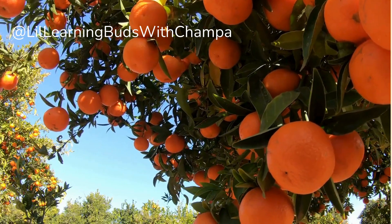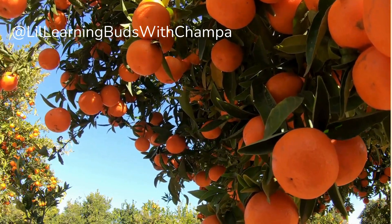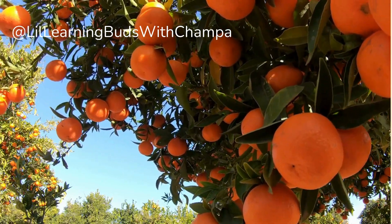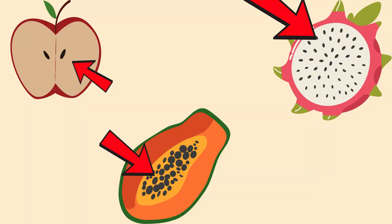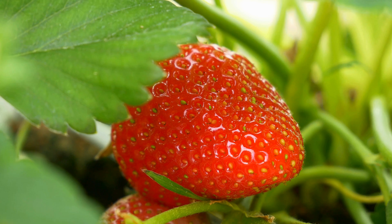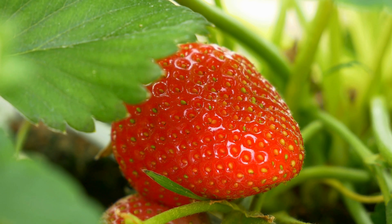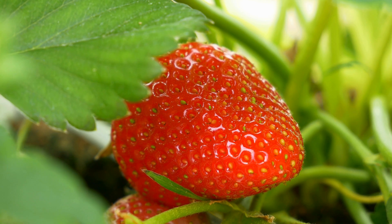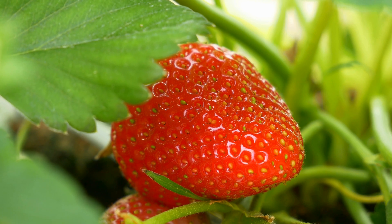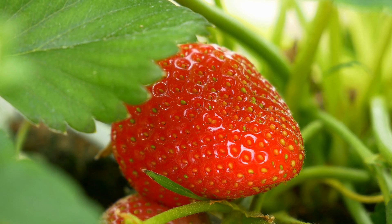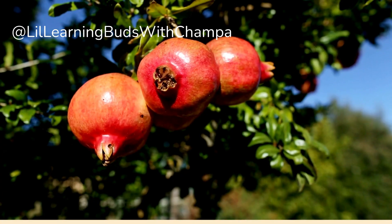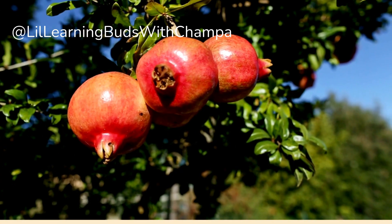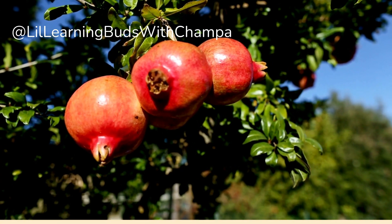Fruits grow from the flowers after a plant has been pollinated. Inside the fruits there are seeds which can grow into new plants. Fruits protect the seeds inside, help spread the seeds to new places by wind, water, or animals, and also help the plant make more plants — baby plants.